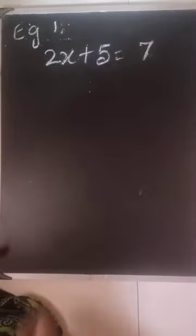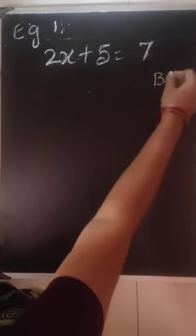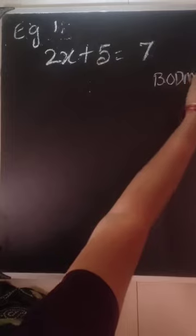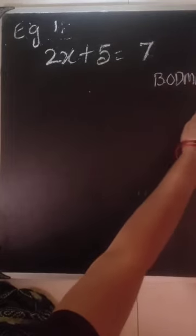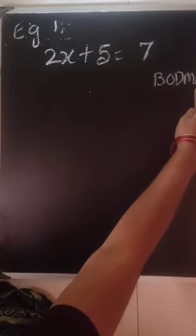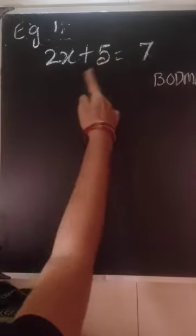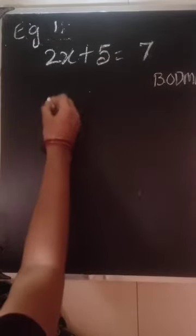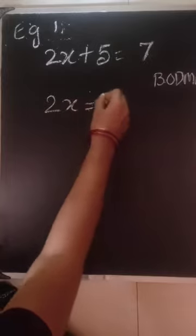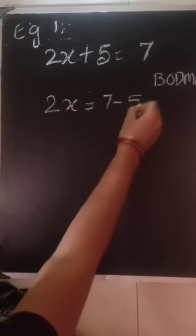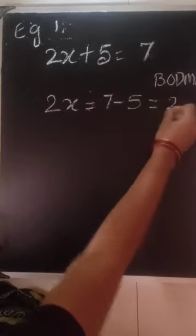Let us take an example. 2x plus 5 is equal to 7. I will write just the BODMAS on the side. What is the first one which is coming? Subtraction, we do not have one. So we start with addition. Whatever is the term which is in addition should go first to the right hand side. So here we will be writing it as 2x is equal to 7 minus 5 which comes to 2.